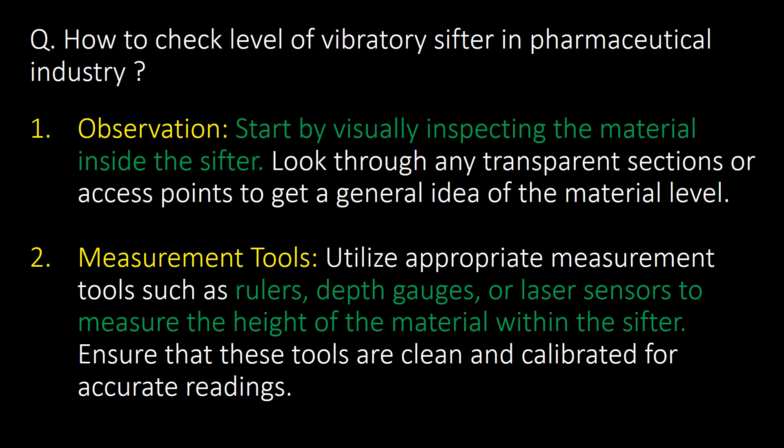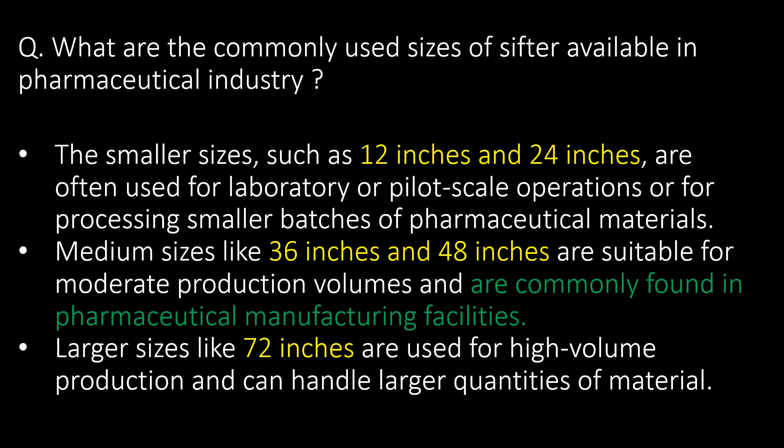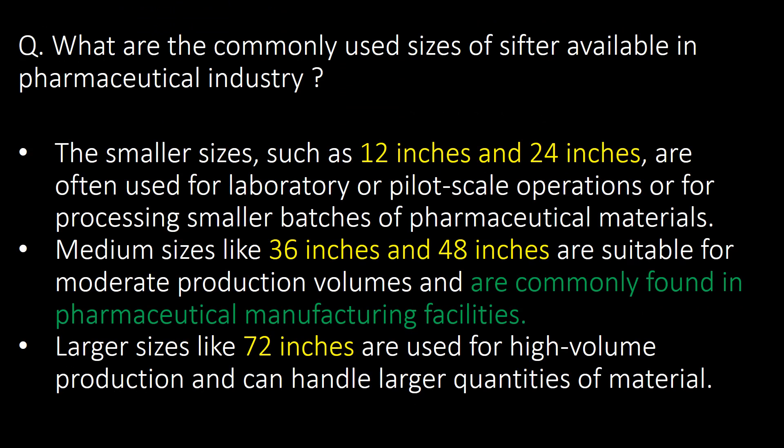Which material is used as material of construction (MOC) for the shifter? Stainless steel grades such as SS304 and SS316 are commonly used because they offer excellent resistance to corrosion and chemical reactions. SS316 is used for product contact parts of the vibratory shifter.